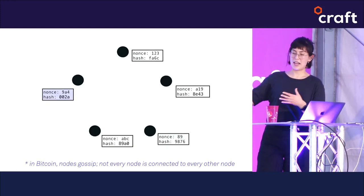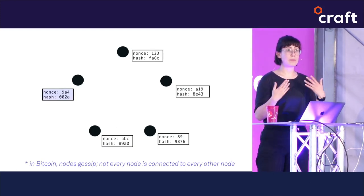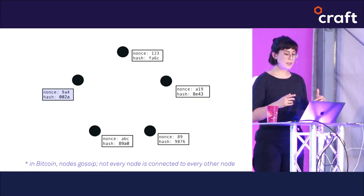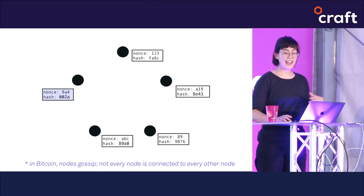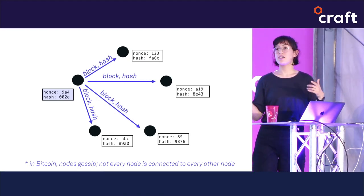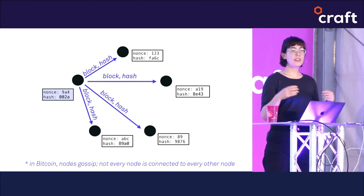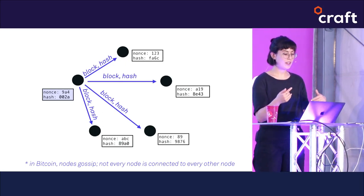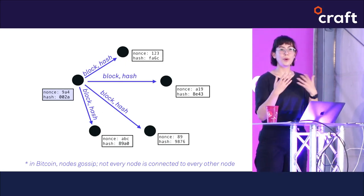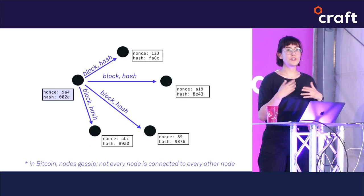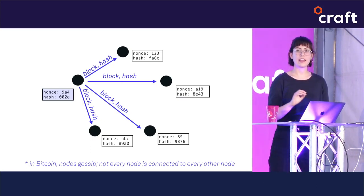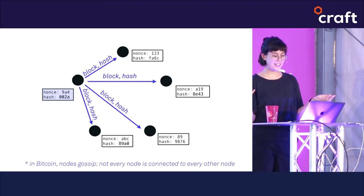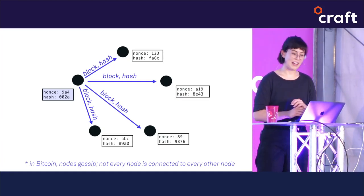At that point, the winning miner can broadcast the nonce, the hash, and the block to all of the other nodes in the system, and the whole system can advance to the next block. Everyone starts the whole process over again, with each node trying to guess a new nonce that can be hashed along with the contents of some new block to produce a suitably small value.